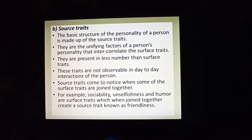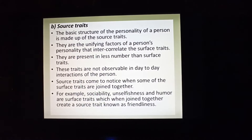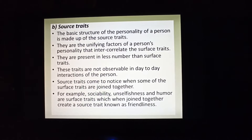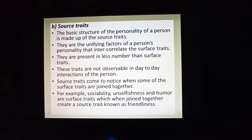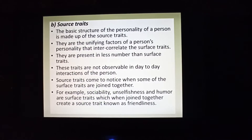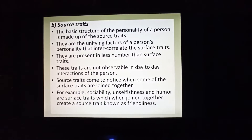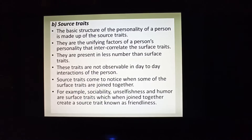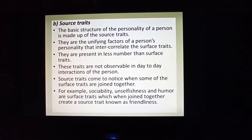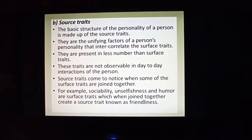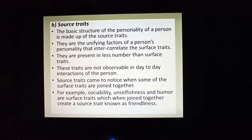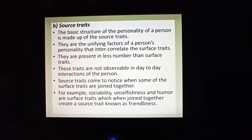The second part he explained was source traits. Source traits are the basic structure of personality. Source traits are fewer in number compared to surface traits. Surface traits you can observe in day-to-day life, but source traits are not very easily observable. For example, sociability, unselfishness, and humor are all surface traits — when you give them collectively a name like friendship or friendliness, that becomes a source trait.